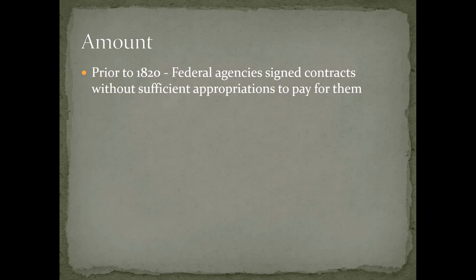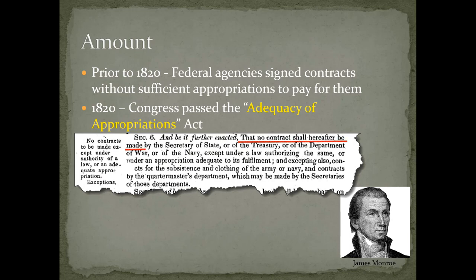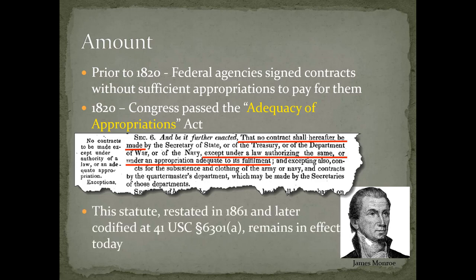Regarding amount: prior to 1820, federal agencies signed contracts without sufficient appropriations to pay for them. In response, in 1820 Congress passed the Adequacy of Appropriations Act, stating that no contract shall be made except under a law authorizing the same or under an appropriation adequate to its fulfillment. This took place during the term of James Monroe and was restated in 1861 and codified at 41 U.S.C. 6301(a), where it remains in effect today.